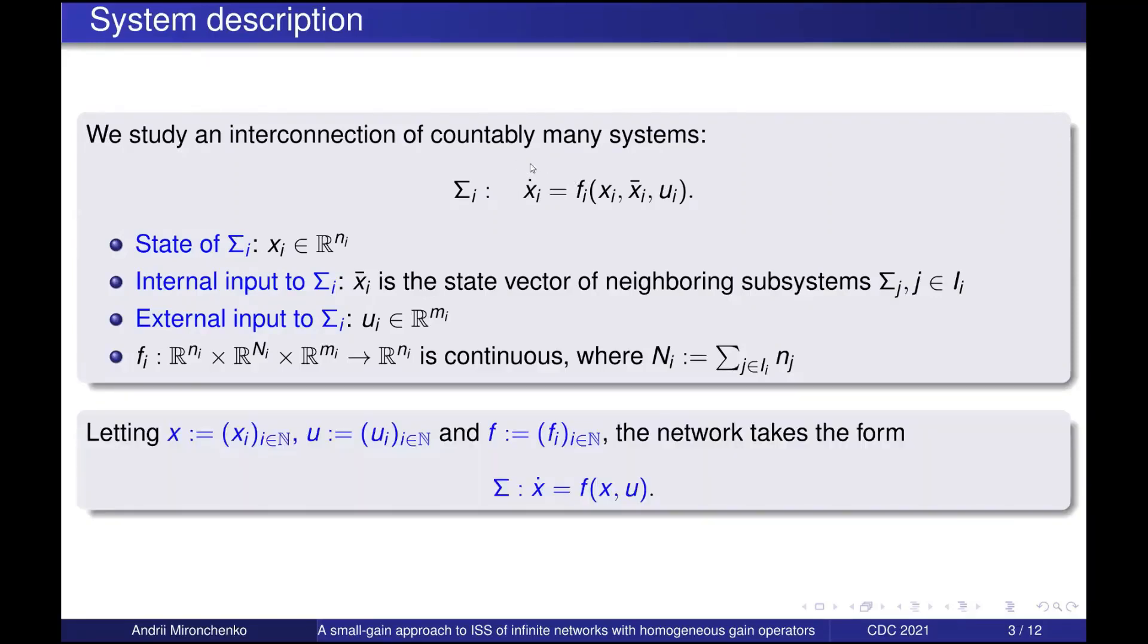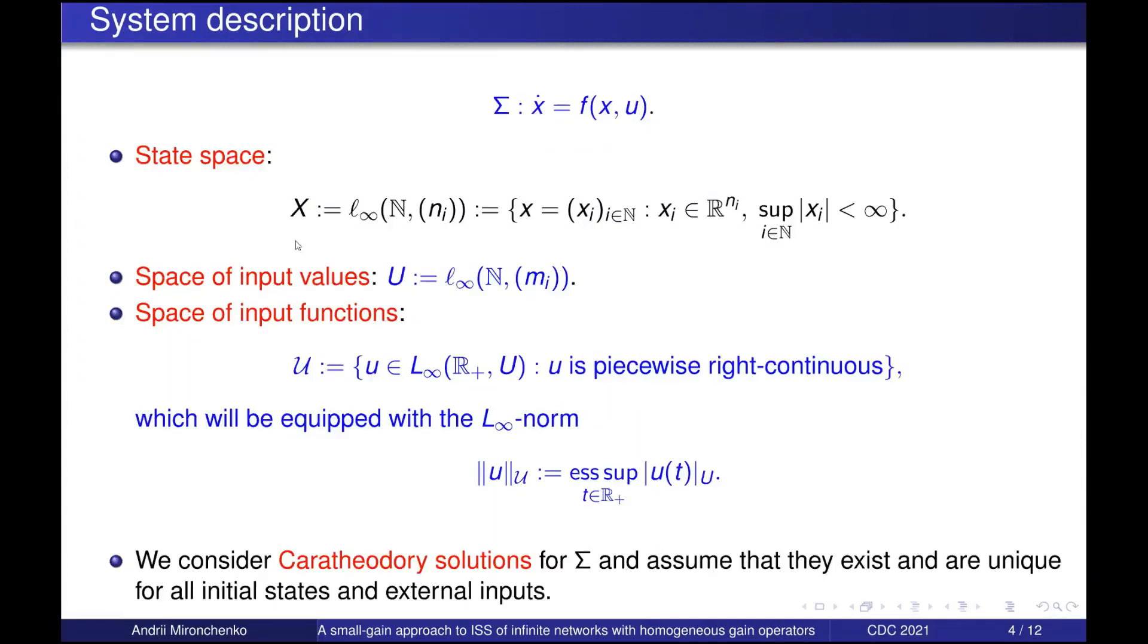To write down the equations for the whole network, we collect all the states, all the inputs and the right hand sides into the corresponding vectors. And now we can write down the equations of motion for the whole network. The state space for the network we take as L-infinity sum of the state spaces of subsystems. The space of input values is L-infinity space as well. And the input functions are piecewise right continuous functions mapping R plus to U. And the norm in this space we assume as L-infinity norm. This fully defines the infinite network. And we consider the Carathéodory solutions of this network, and we assume that it is well posed in the Carathéodory sense.